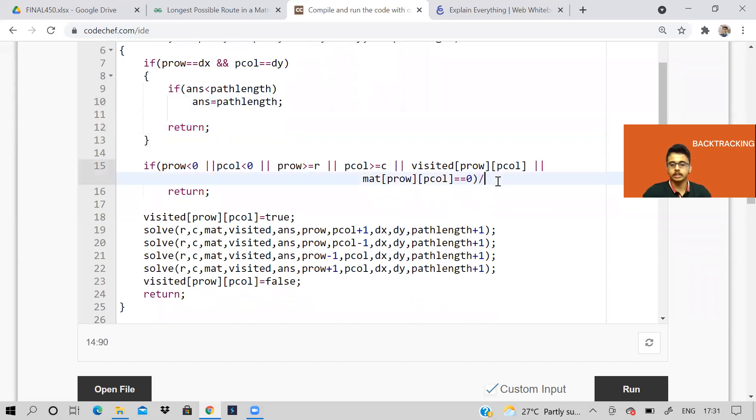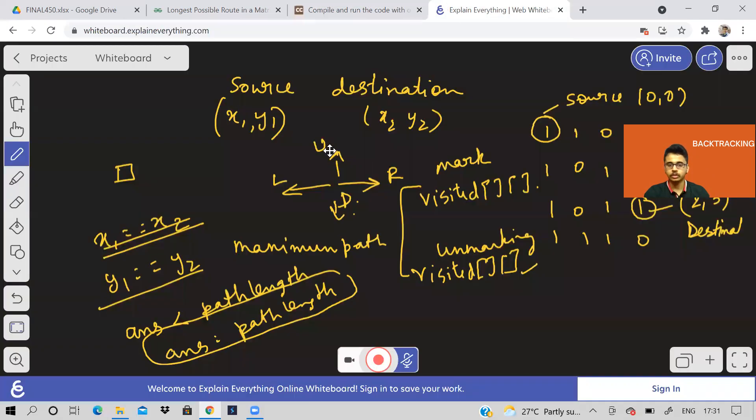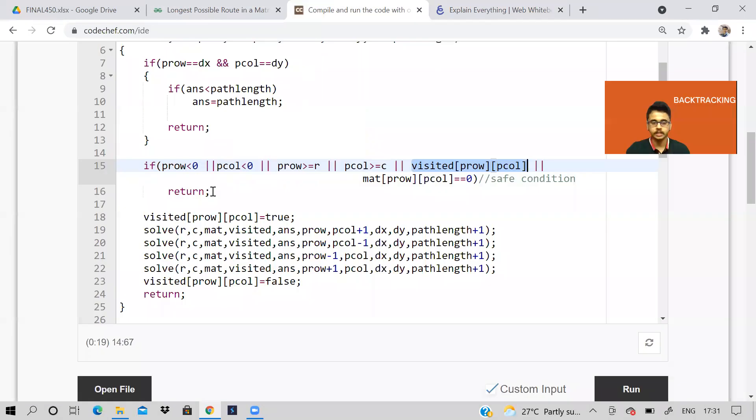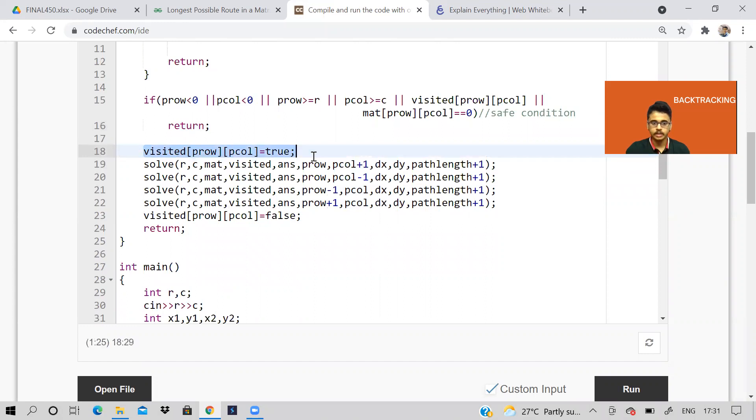And this is for checking the safe condition. If we are inside the matrix and we are not on a hurdle and we have not visited this point before, because as I told you here from source, we can go like this and go here like this and come back. So then we'll get an error here that we have visited this point twice. So we need to know that we have visited that point twice. So we can't continue with this path. So we can't continue with the path. So we just return. We don't do anything else.